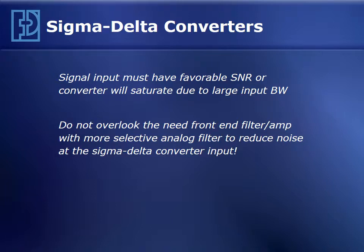To emphasize the first point: the signal-to-noise ratio on the signal input must be favorable. If it's not — if you have a lot of out-of-band energy in your signal — it will easily saturate the sigma-delta converter due to its huge input bandwidth. To combat that, you need to use a more complex filter, one that's got more poles, just like the ones we've been studying: the LP4 or LP8 filters. These higher-order filters will act to eliminate a good deal of that out-of-band energy and allow the converter to operate without saturating.